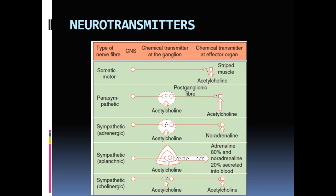Coming to the first topic: neurotransmitters. As we studied in the previous class, the autonomic nervous system — whether the sympathetic division or the parasympathetic division — consists of a preganglionic neuron and a postganglionic neuron. To conduct action potentials or nerve impulses, they secrete certain neurotransmitters. Knowledge of those neurotransmitters is important for pharmacological purposes, treatment, or drug use for any disease.